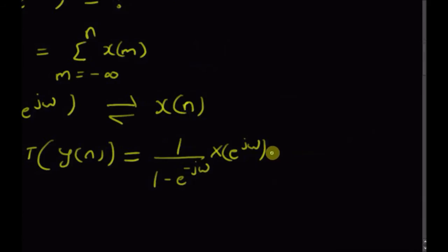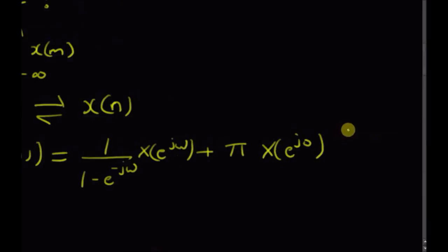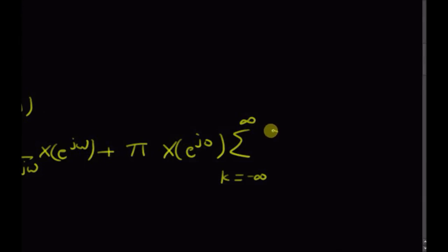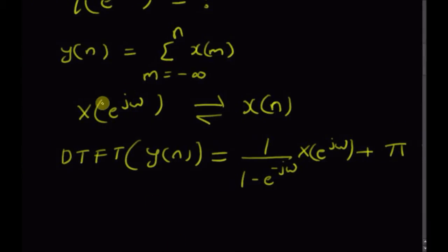...plus π times X(e^j0), that is X(e^jω) evaluated at ω = 0, the value of the DTFT of x(n) at ω = 0, multiplied by the summation from k = -∞ to +∞ of δ(ω - 2πk). This is the formula for the DTFT of a signal y(n) defined as an accumulation sum.